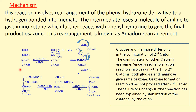This is the glucose molecule. When it is treated with phenylhydrazine — a derivative of ammonia — a condensation reaction occurs to form a phenylhydrazone derivative. We know carbonyl compounds, when treated with a derivative of ammonia, undergo a condensation reaction. The oxygen atom of the aldehyde group reacts with the two hydrogen atoms from phenylhydrazine and is removed as water. Finally, this hydrazone derivative is formed.